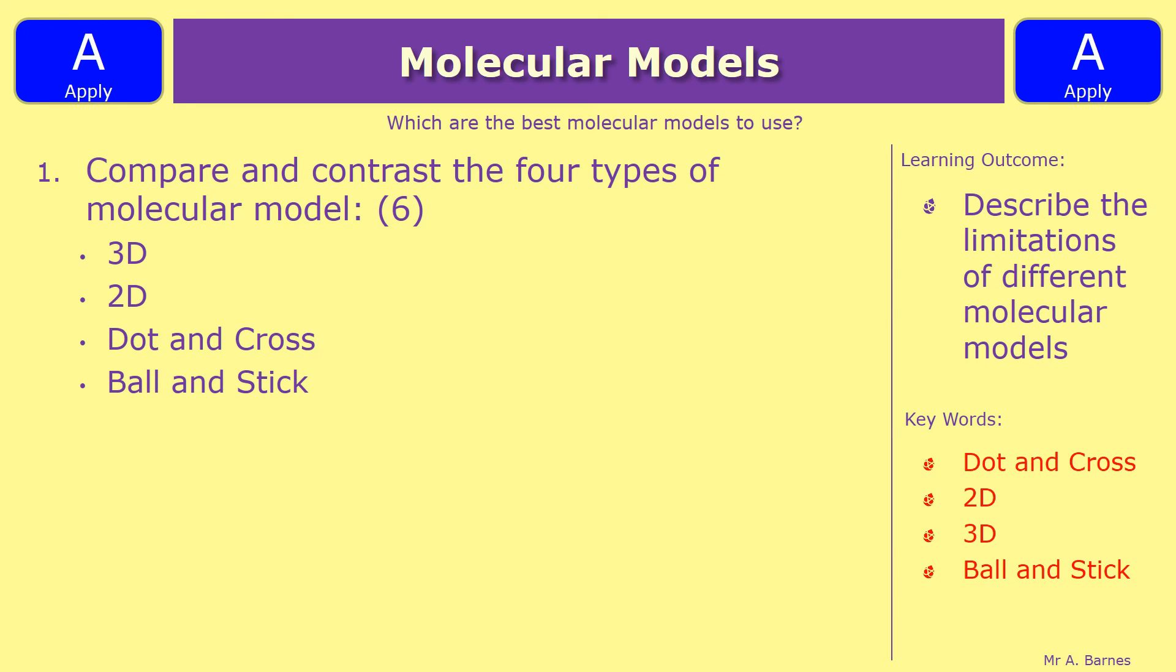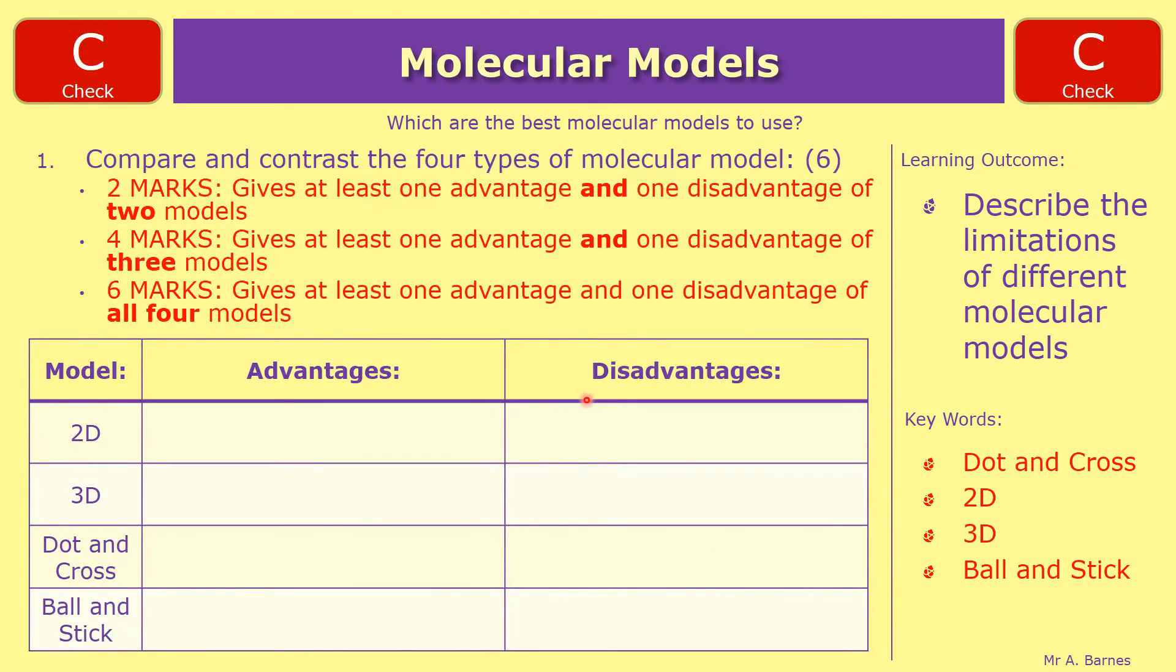Alright then, let's have a go. So for two marks in this six-marker, you needed at least one advantage and one disadvantage of two models—so any two of these ones down here, you needed one advantage and one disadvantage of each.